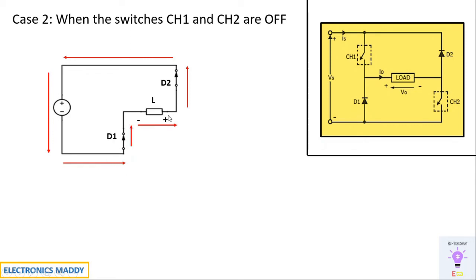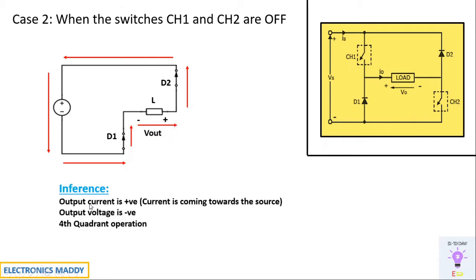The current is still flowing in the same direction, so output current is positive. One important point: in the previous case, current was flowing from the source, but now current is flowing towards the source. Please make note of this for waveform analysis. Output voltage is negative — if you observe, the load terminals show minus and plus, so it is negative. This mode of operation is called fourth quadrant operation.